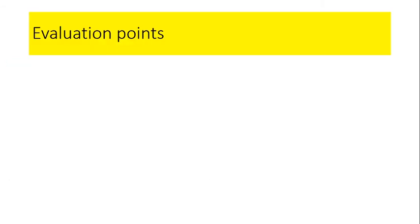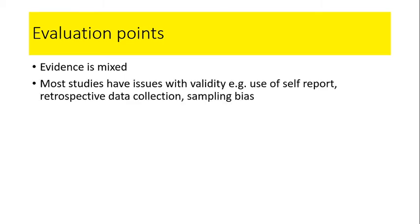Let's have a quick look at a couple more evaluation points. First, be aware that the evidence is really mixed — some studies support the idea of an internal working model and some really don't. Many studies in this area have problems with validity. For example, when you've got self-report, this is quite a sensitive topic — people may not want to report that they've parented negatively. Social desirability bias may come into play and they might present themselves in a better light, perhaps being a bit ashamed to admit they're jealous in relationships.